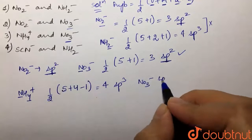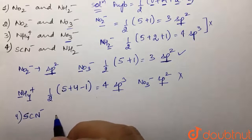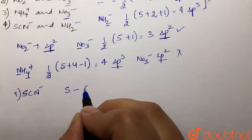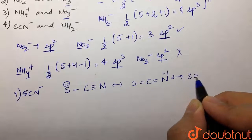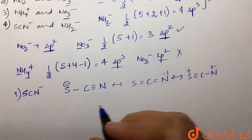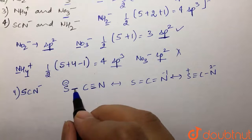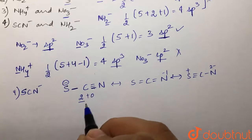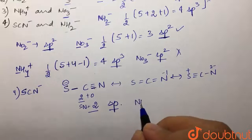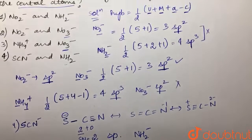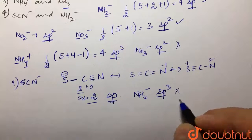For Option 4, we have SCN⁻. Drawing the structure, carbon is the central atom making two sigma bonds with no lone pairs, giving a steric number of 2, so it is sp hybridized. Paired with NH₂⁻, which is sp3 hybridized, they again do not match.